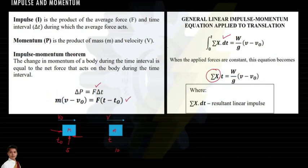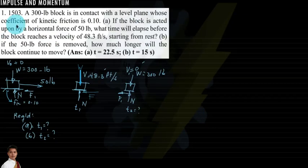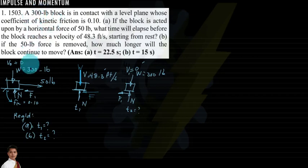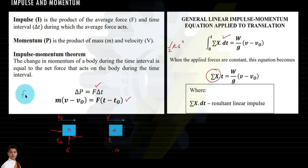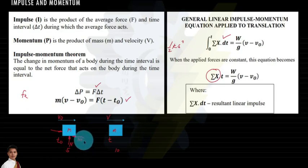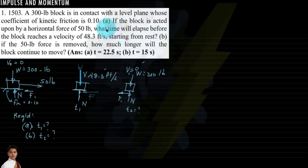Let us solve some examples. First problem from the book of Ferdinand Singer: a 300-pound block is in contact with a level plane whose coefficient of kinetic friction is 0.1. The given weight is 300 pounds, and the coefficient of kinetic friction f-sub-k will enter into the friction force formula: friction force equals normal force multiplied by coefficient of friction.